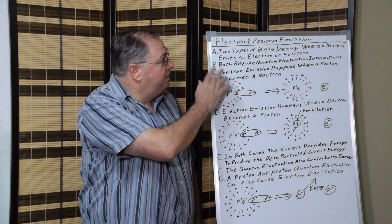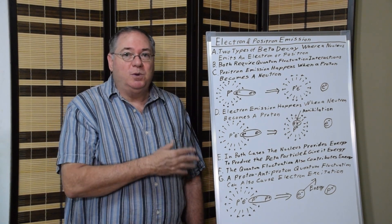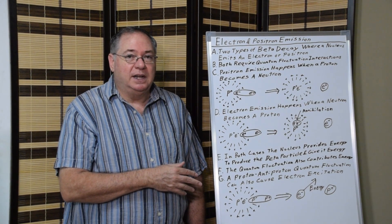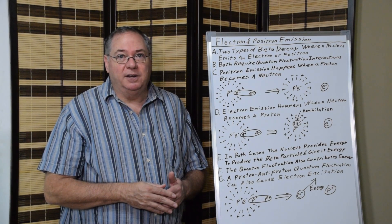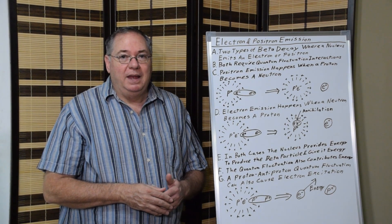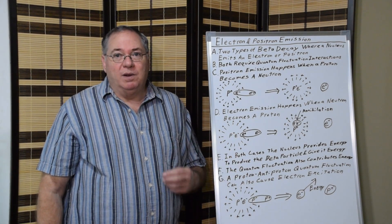This is basically how electron and positron emission happens. It's a simple quantum fluctuation interaction. It doesn't involve W and Z particles. It doesn't involve neutrinos. And it's just a simple extension of quantum field theory.